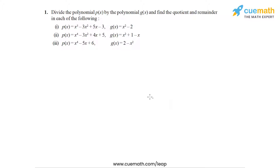In question 1 of this exercise, we have to divide the polynomial p(x) by the polynomial g(x) in each case. There are three parts, and in each part we have to find the quotient and the remainder. We are going to use the long division process applied to polynomials.